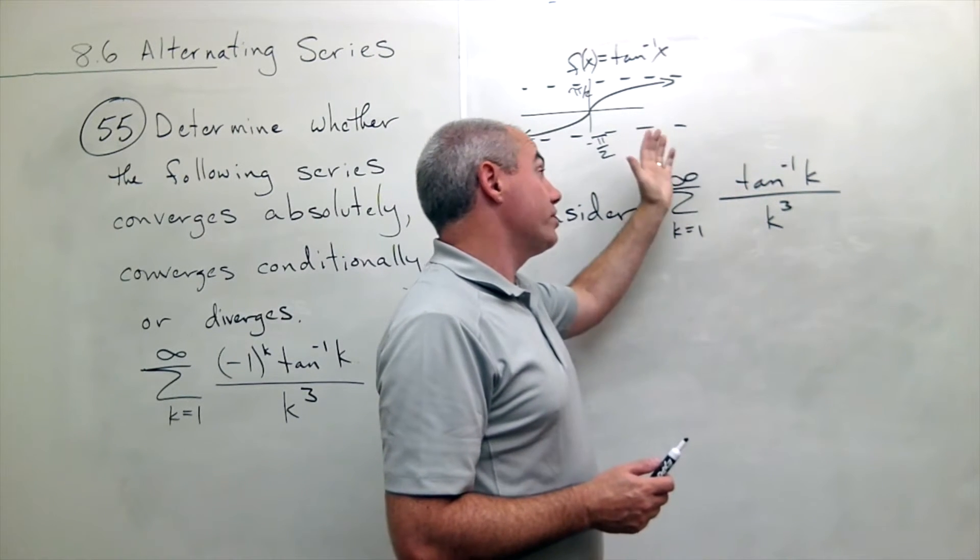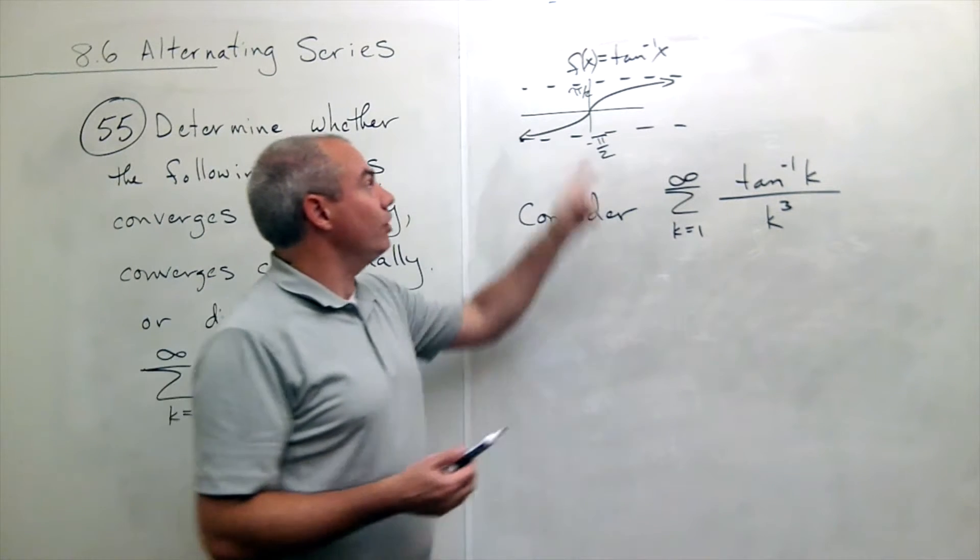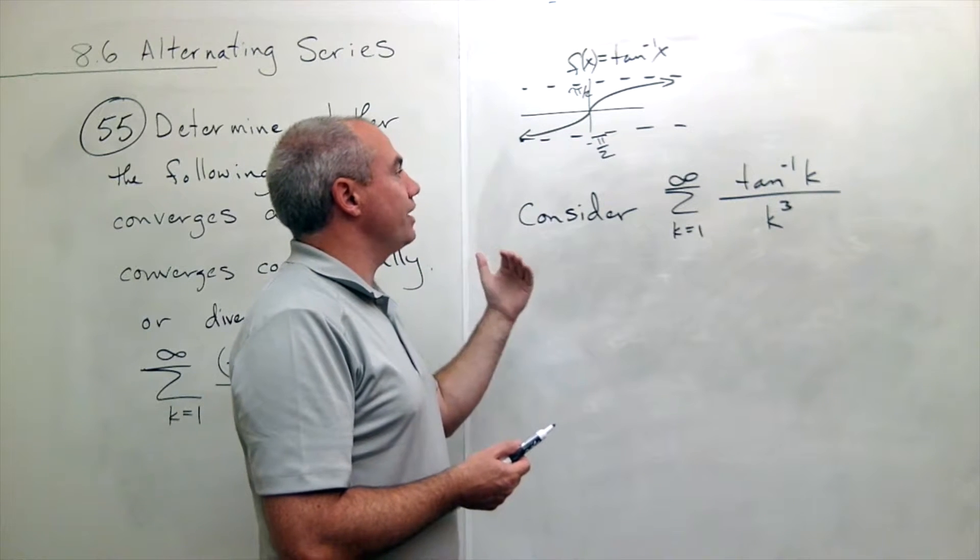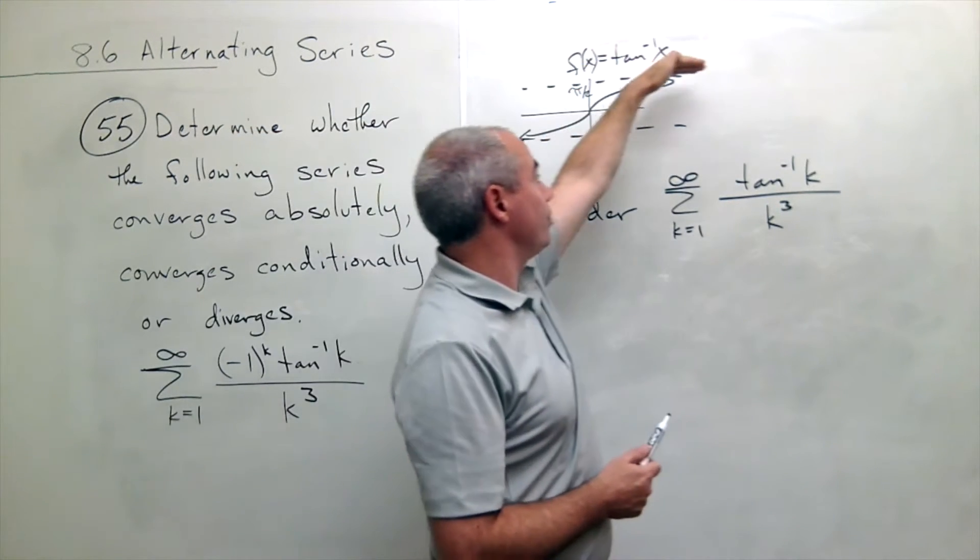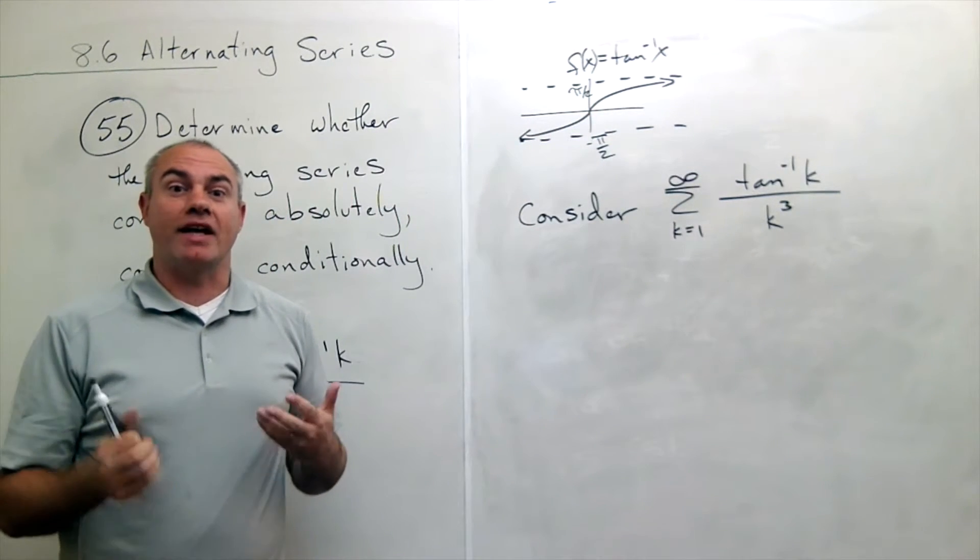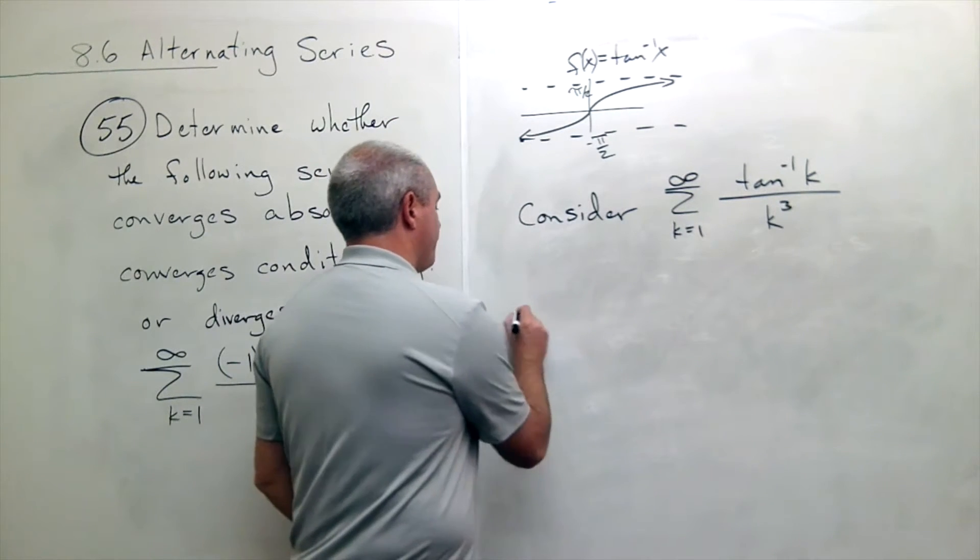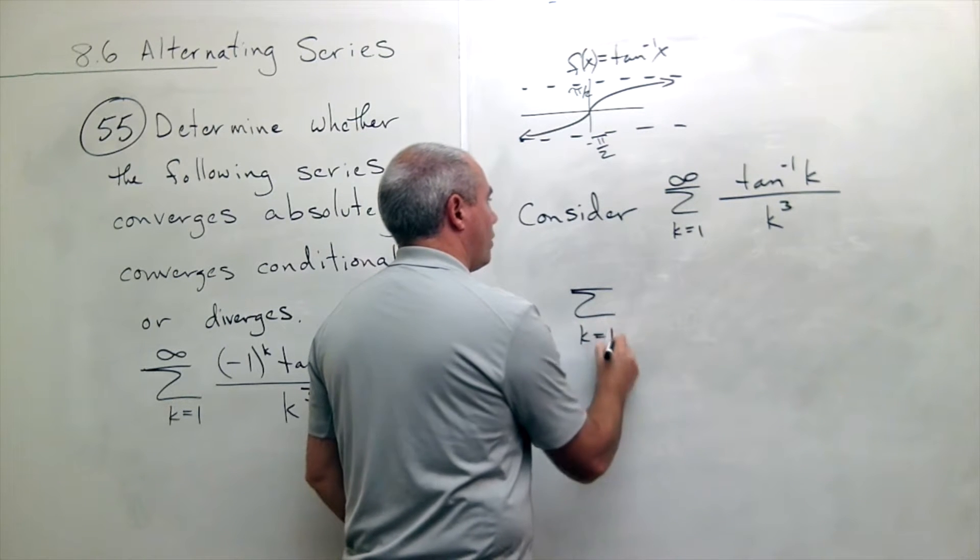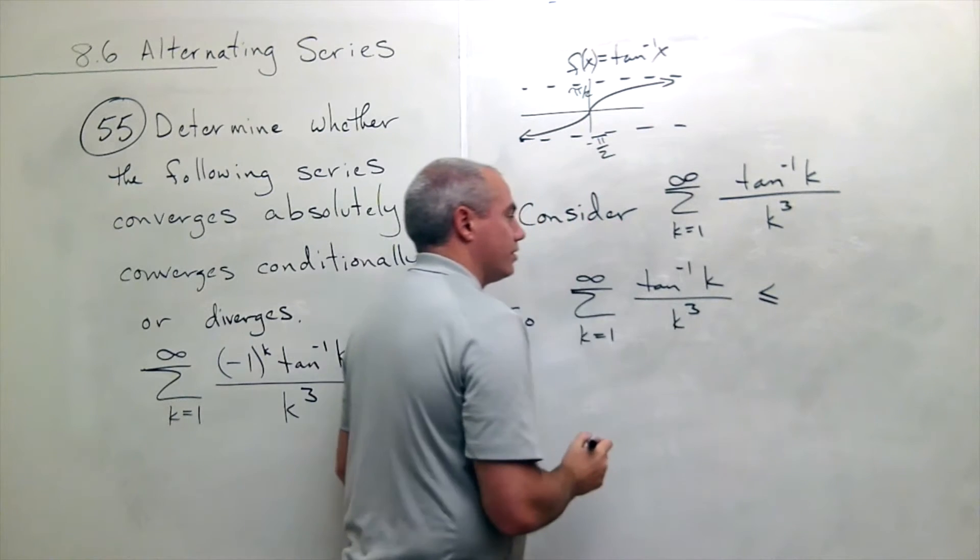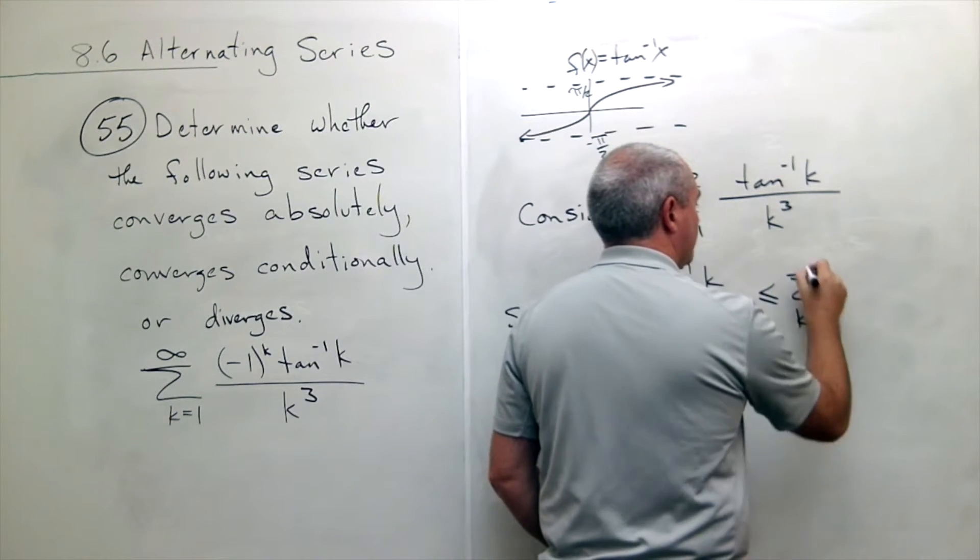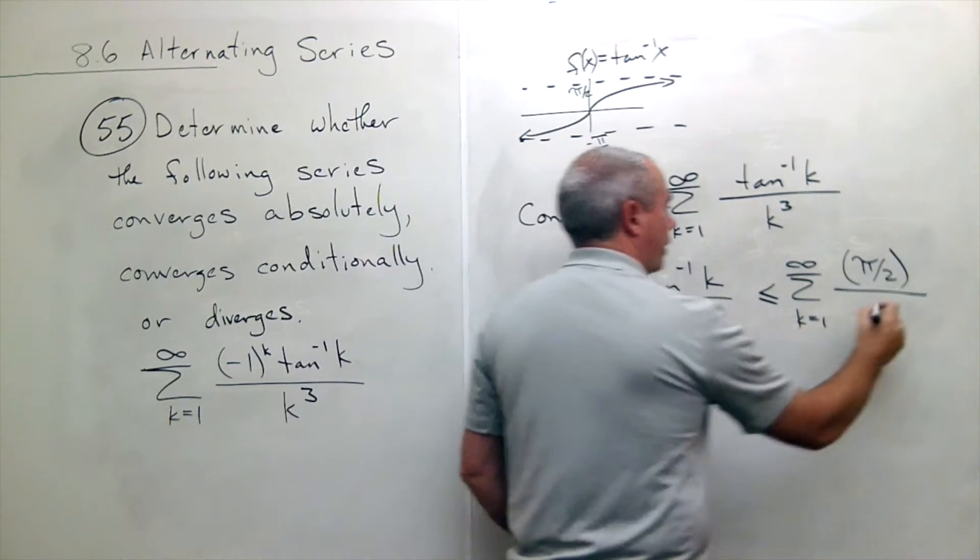Well, what I see right off the bat is first of all, it's kind of a mess having tan inverse of k in there. I'm not exactly sure what to do with this tan inverse of k. But if I look back up at my graph, I say, wait a second here, there's something that's always bigger than tan inverse of k. And that is pi over 2. Pi over 2 as a value is bigger than every value of tan inverse of k. So I could give an upper bound on tan inverse of k of pi over 2. Let me write it and show you what I mean. So, we have that the sum k going from 1 to infinity of tan inverse of k over k cubed is always less than or equal to the sum k going from 1 to infinity of tan inverse of k is always less than pi over 2 over k cubed.